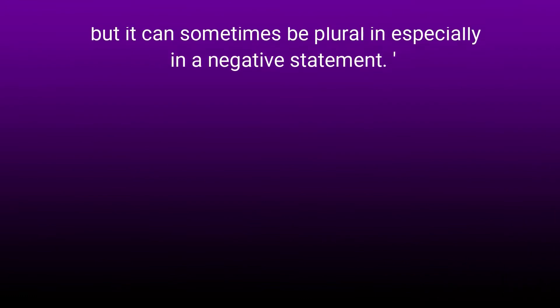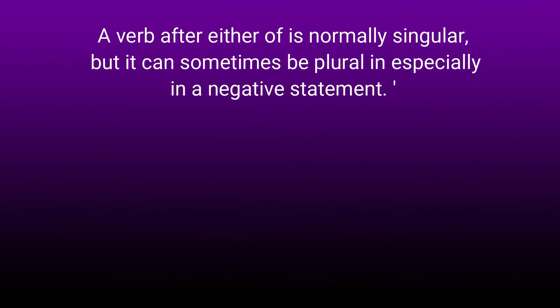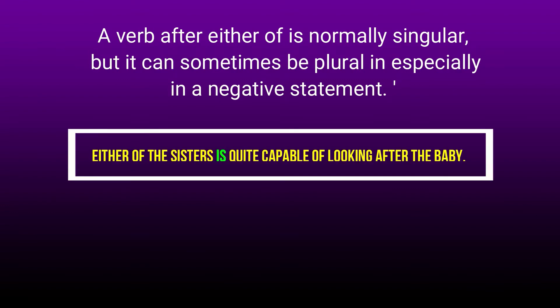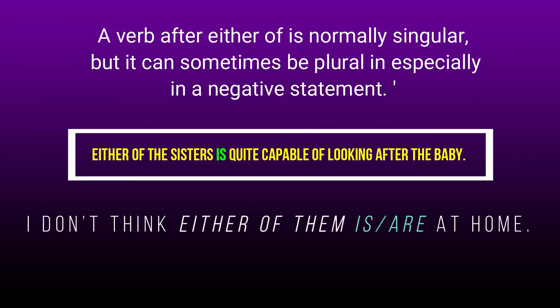A verb after 'either of' is normally singular, but it can sometimes be plural, especially in a negative statement. For example: Either of my sisters is quite capable of looking after the baby. I don't think either of them is — or are — at home.